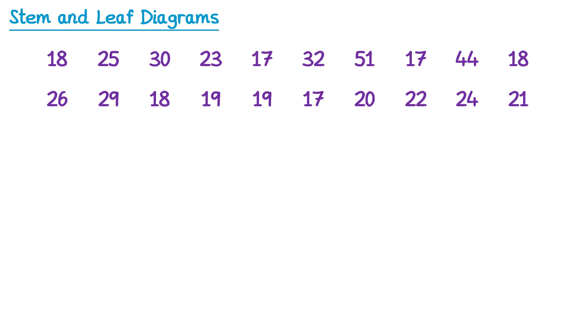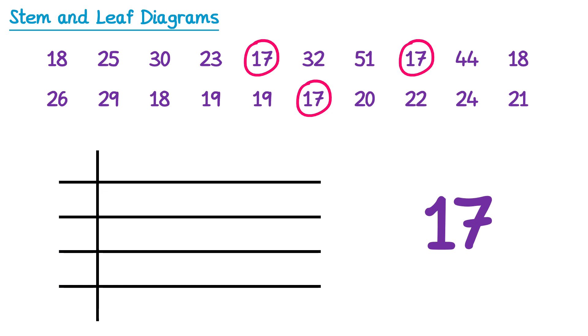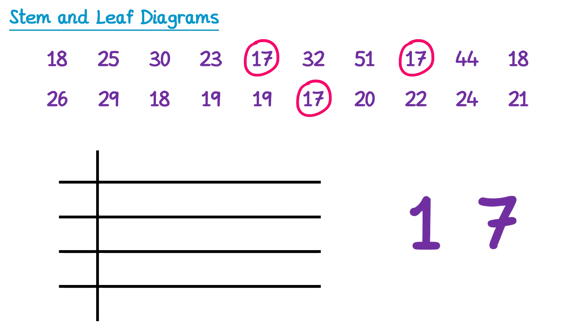To turn this into a stem and leaf diagram we first need to draw out some lines. Usually in an exam these will be drawn for you. Then we need to find the smallest number in the list — that's 17, and there are three of them. We then take the number 17 and split it into two parts. The part on the left hand side is known as the stem, and the part on the right hand side is the leaf.